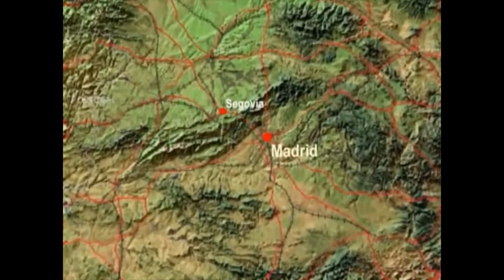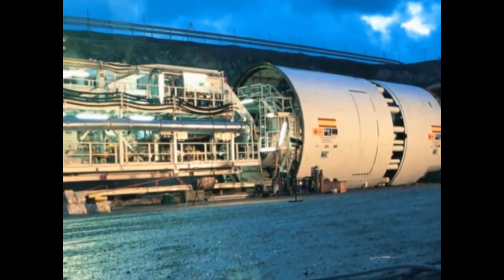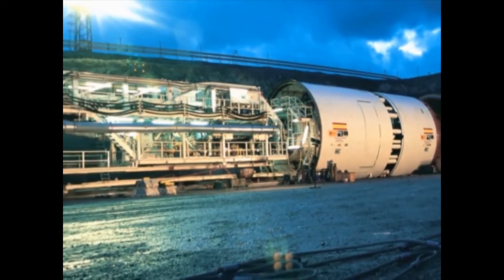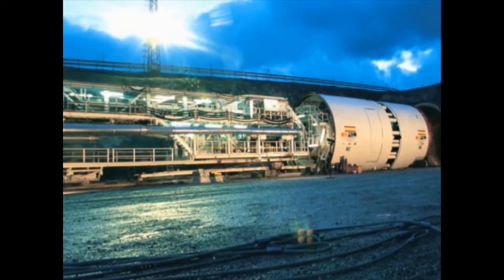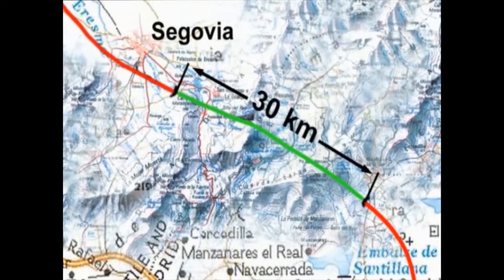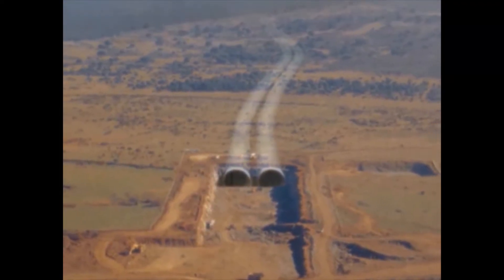Based on the specific requirements for building the Guadarrama tunnels north of Spain's capital Madrid, Herrenknecht designed the 9.51-meter diameter double-shield machines. They will produce an approximately 30-kilometer-long tunnel for a high-speed train through the Guadarrama mountain range.